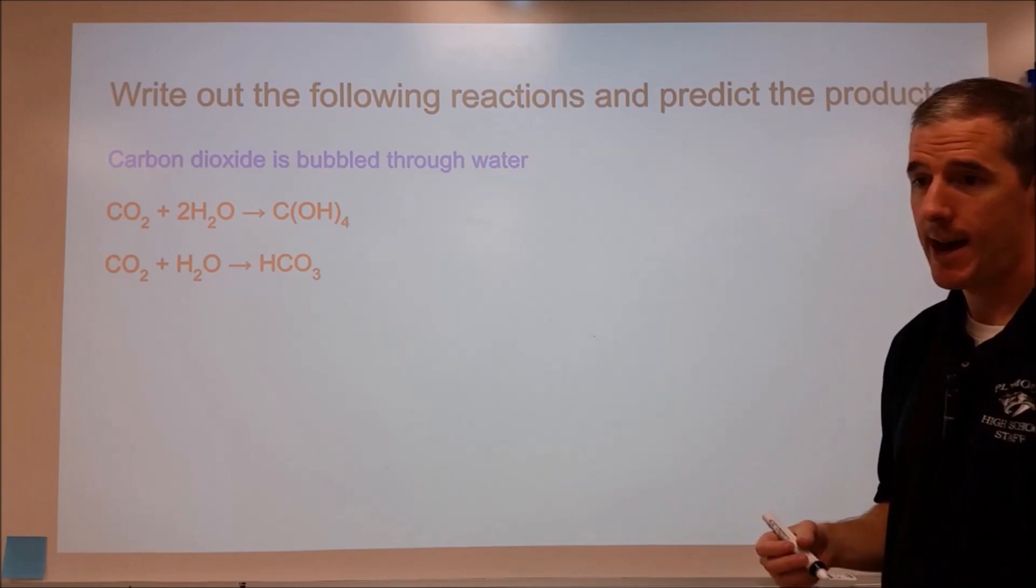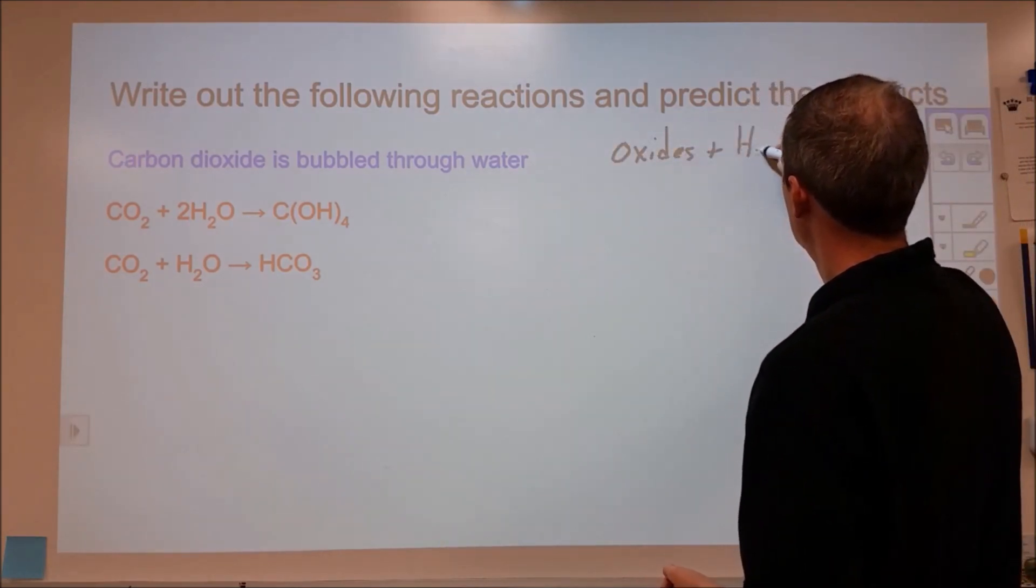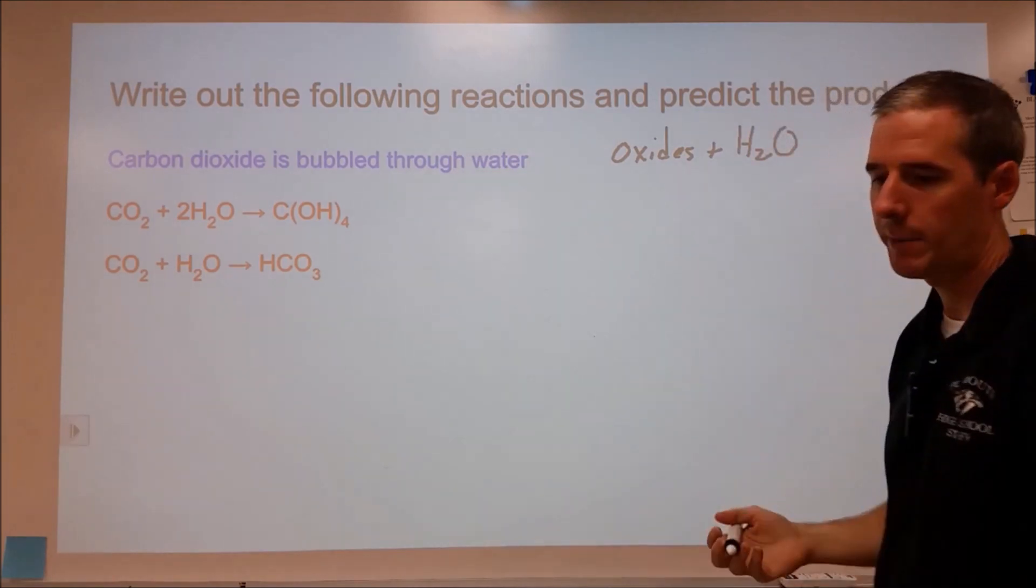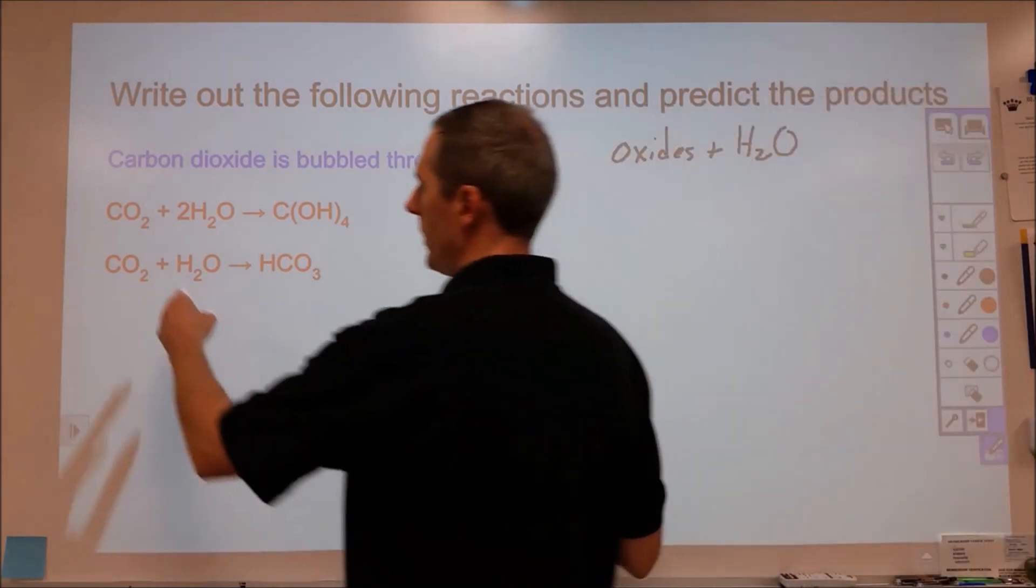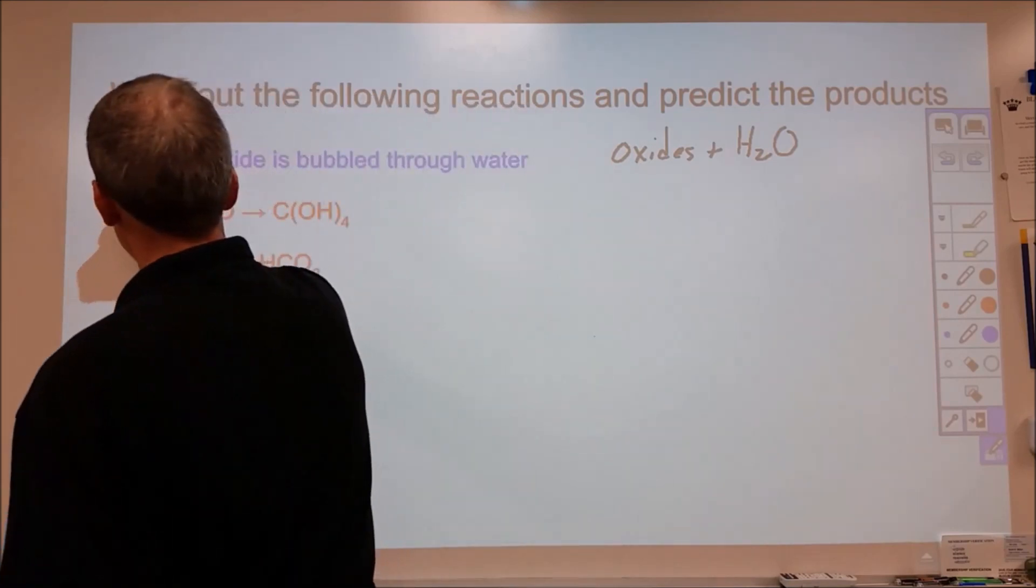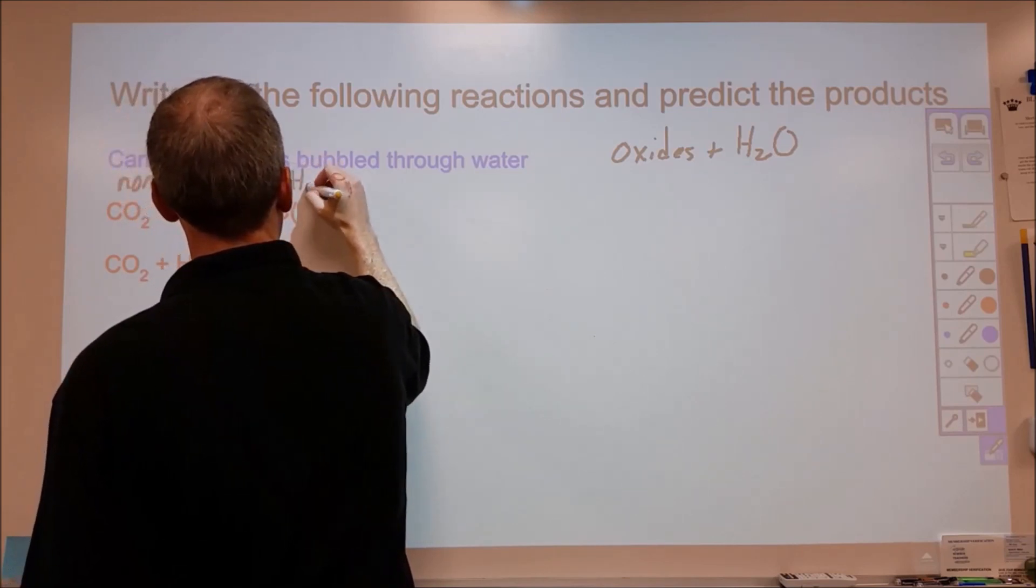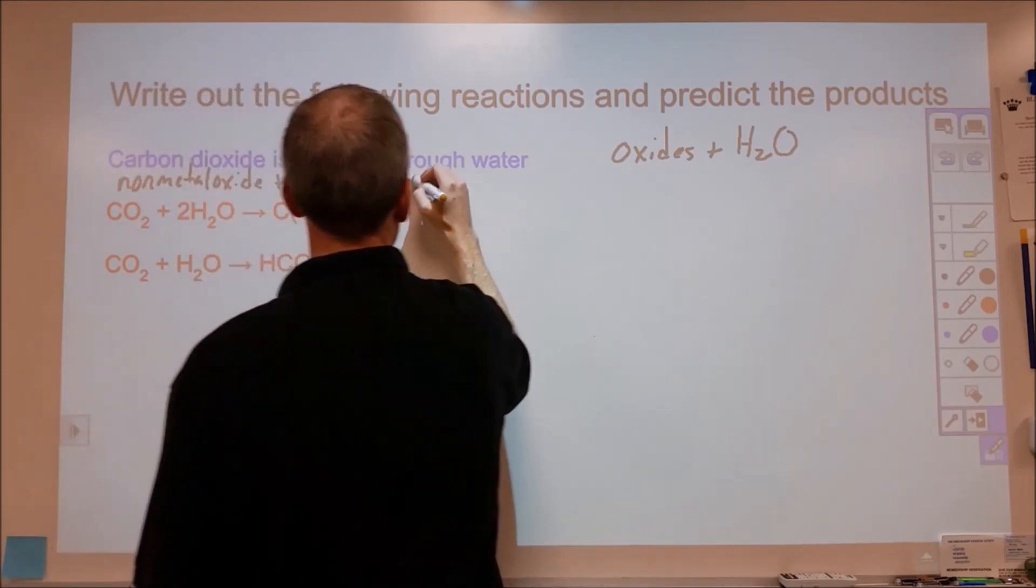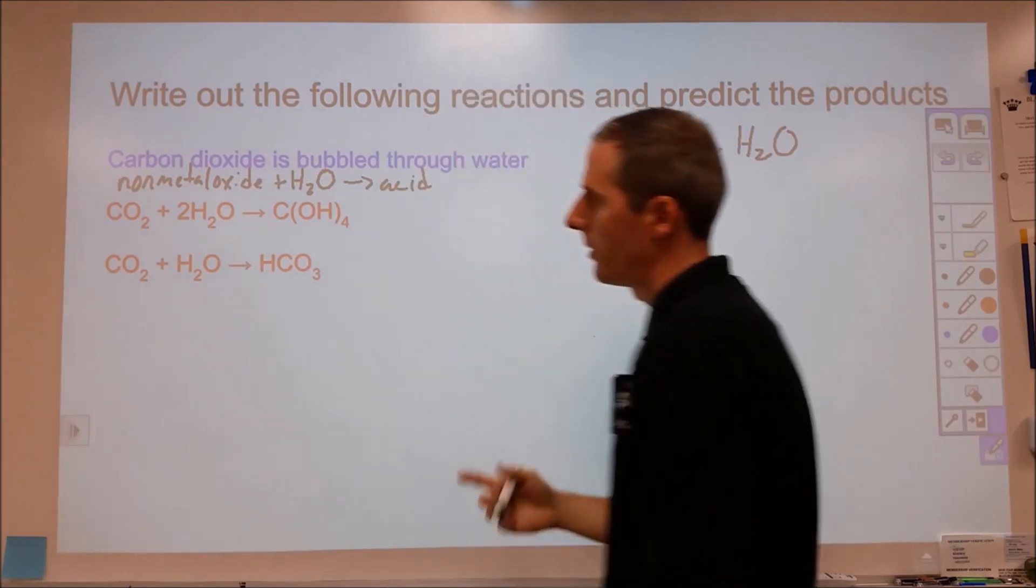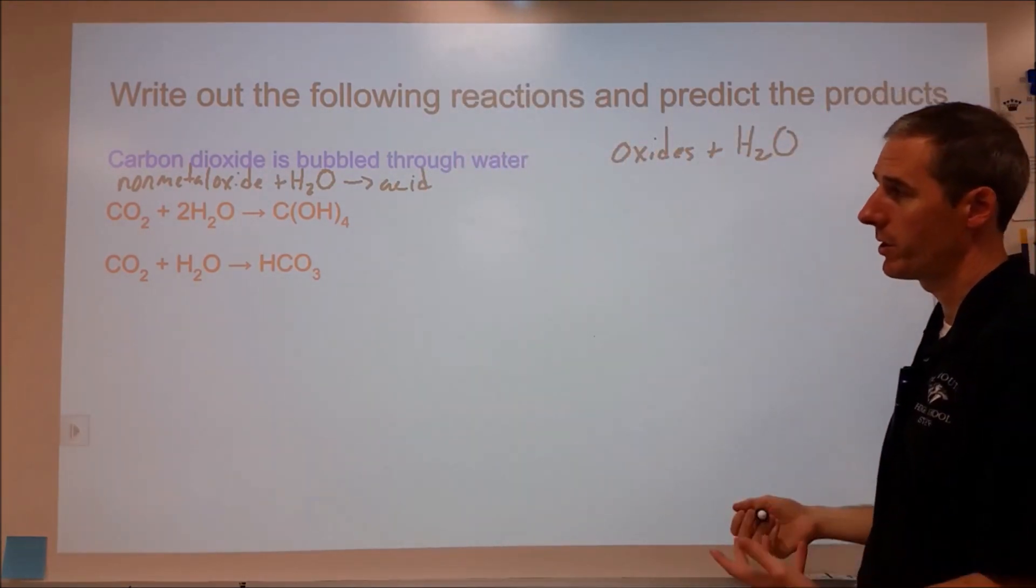So here we're looking at oxides being added to water. Now there's two types of oxides that we deal with typically. If we have a non-metal paired up with oxygen, we have a non-metal oxide, and when we add those to water, we're going to end up producing an acid. So carbon, not a metal, carbon dioxide plus water, we're going to produce some kind of acid.